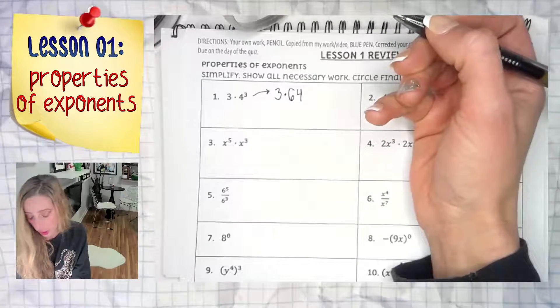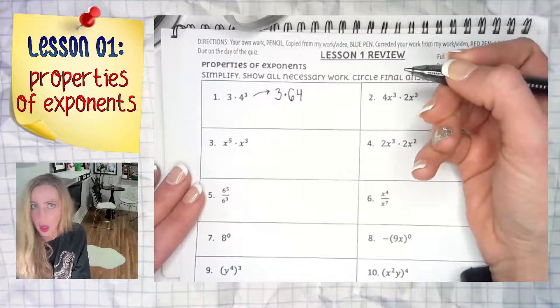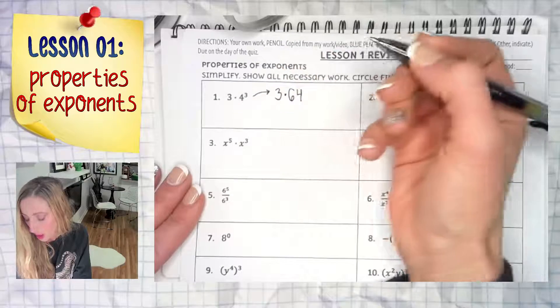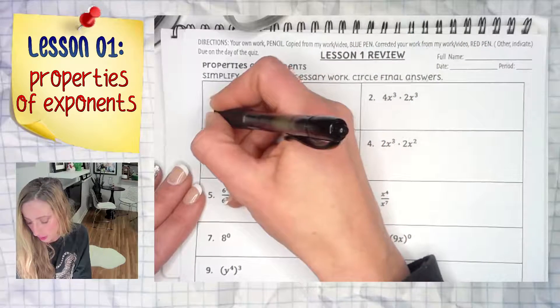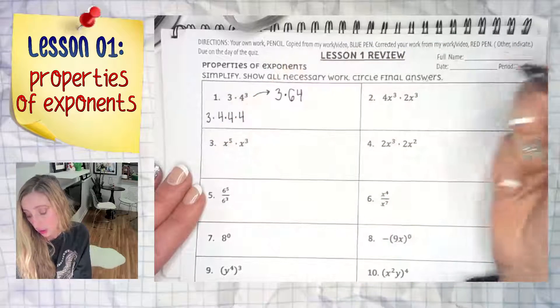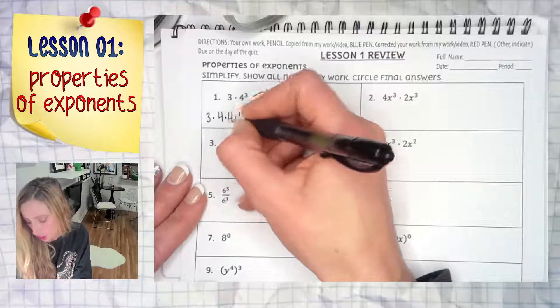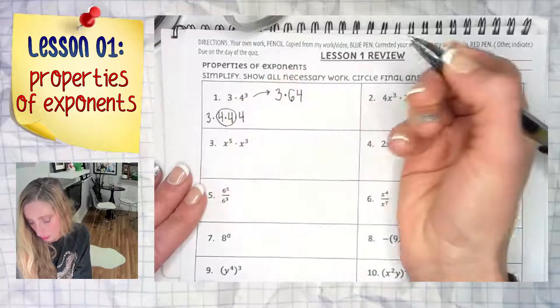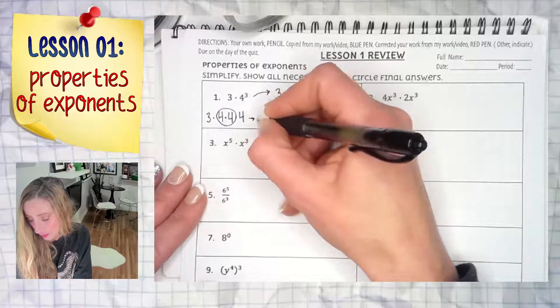In the event you don't know 4³ by heart and have to work it out without a calculator, you should know it's 4 × 4 × 4. You should also know that 4² or 4 × 4 is 16.